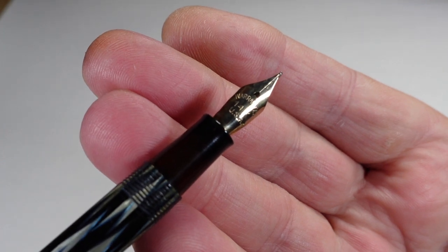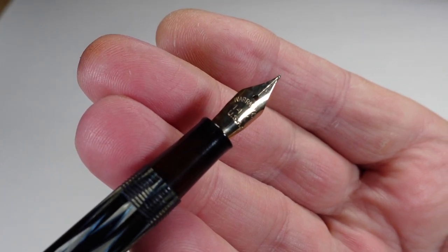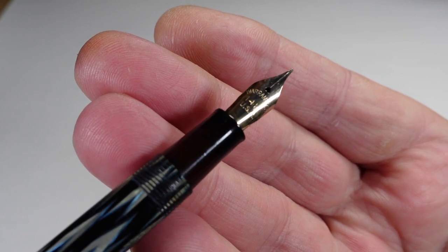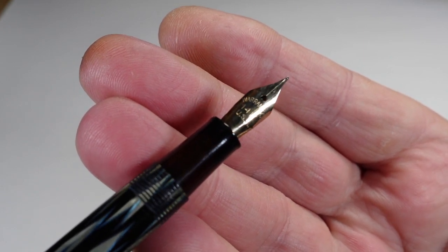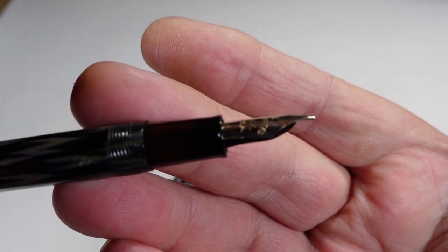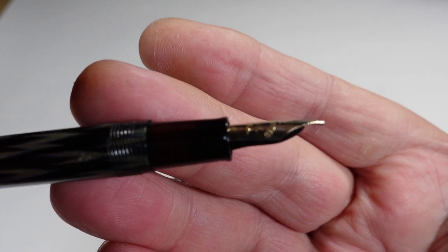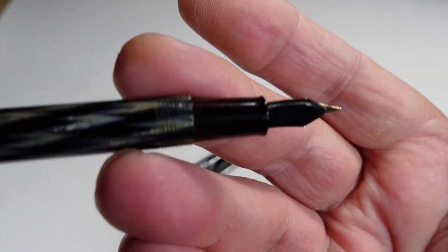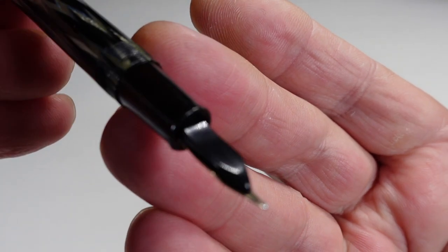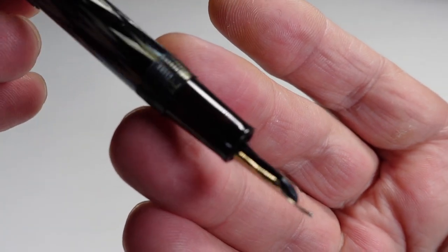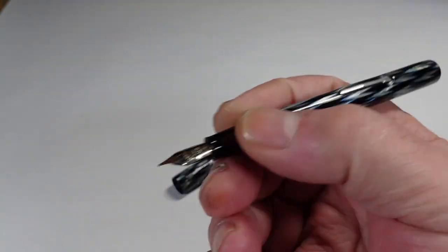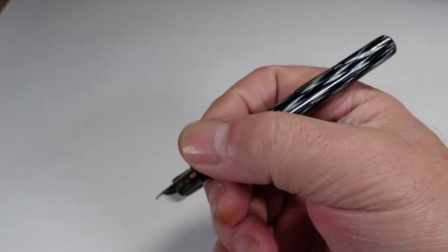There's the nib there. And the nib, the imprint reads Warranted 14 Carat, and then to the very bottom it says USA. So yeah, the USA may, you know, we may be right on the Imperial Pen and Pencil Company. There's a sideways view. There's the feed underneath, lovely and clean. And yep, there's not a great deal I can say about it.